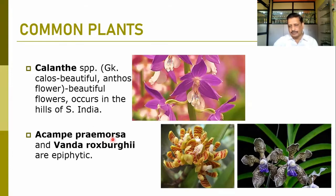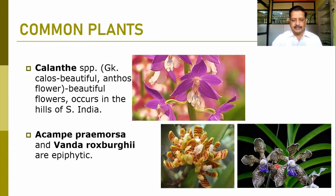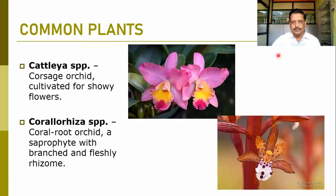Then there is Acampe praemorsa, where you can find striped structures just like a triangular lily. Then Vanda roxburghii — here you can observe the beautiful flowers. These are epiphytes growing on other plants and having beautiful flowers. Then there is a Cattleya species — see the beautiful flower. This is the labellum, which can be ornamented to attract insects for pollination, and it is cultivated for its showy flowers.